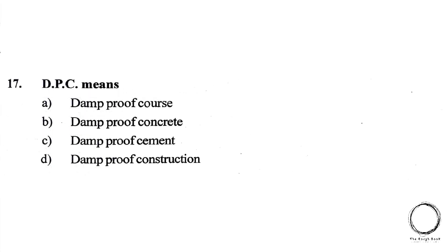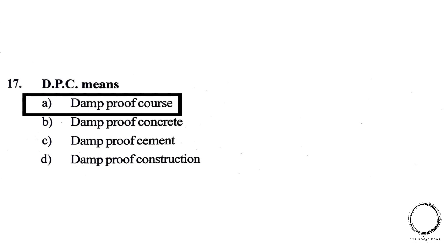Next, D.P.C. means A. Damp proof course, B. Damp proof concrete, C. Damp proof cement, D. Damp proof construction. The right answer is A, Damp proof course.